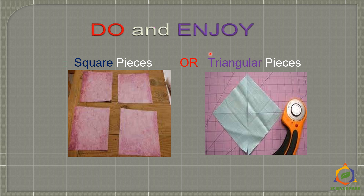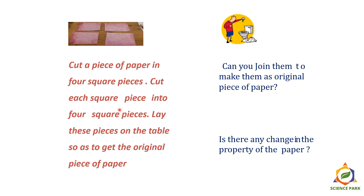You can do this activity and enjoy yourself. Take one large sheet of paper and cut it into square or triangular pieces. Is this a physical change or a chemical change? Do it yourself and tell me the answer in the discussion period. When you cut the paper and try to join the pieces, can you make them back into the original piece of paper? Is there any change in the property of the paper? Write down your explanation and answer, and let's discuss it in our discussion meeting.